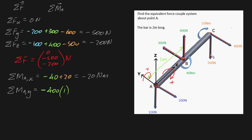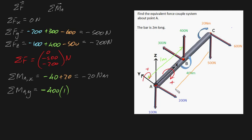The 500 Newton force has a tendency to rotate the bar in the positive y direction, so this will be positive 500 times the perpendicular distance from the force to the axis of rotation, which is two meters. So the net moment at point A about the y axis will be equal to 600 Newton meters.